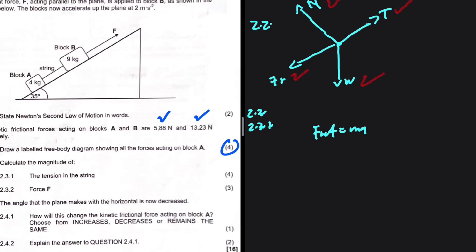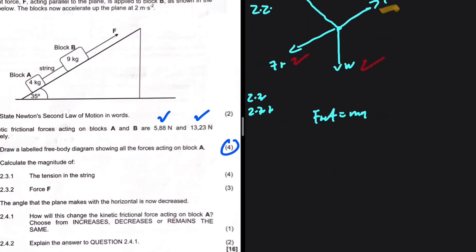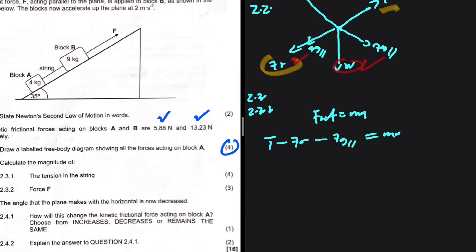How you follow up this equation is by identifying which force is pulling the object — it is the tension. So you say tension minus all the forces that are opposing. We have the frictional force opposing, so tension minus frictional force. We also have the weight, which we resolve into Fg parallel and Fg perpendicular. Fg parallel is also opposing the motion, so minus Fg parallel. This equals MA.